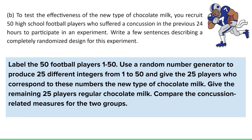Use a random number generator to produce 25 different integers from 1 to 50, and give the 25 players who correspond to these numbers the new type of chocolate milk. Give the remaining 25 players regular chocolate milk. Then compare the concussion-related measures for the two groups. In this example they didn't tell us how we needed to randomize our groups, so we used the random number generator. With a sample of size 50, we could do names in a hat or a random digit table, but a random number generator is usually one of the easier ways to write this up.